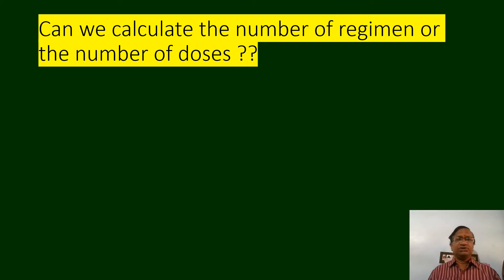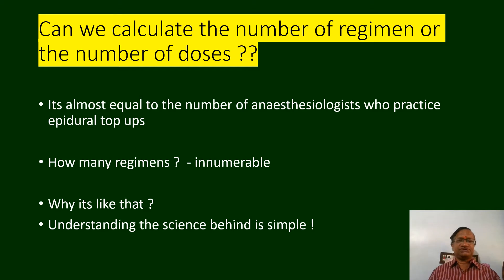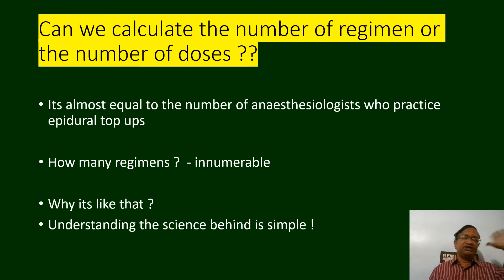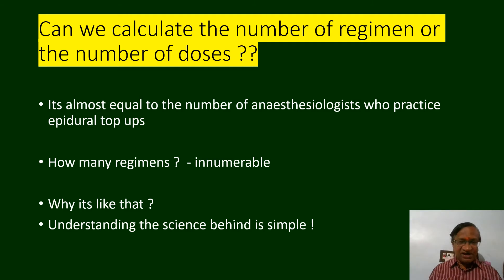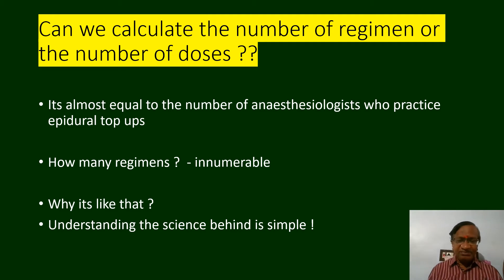Can we calculate the number of regimens or the number of doses? It is almost equal to the number of anesthesiologists who practice top-ups — everyone has got his own regimen, everyone has their own top-up regimens. Why is it like this? Because I think we feel that understanding the science behind this is simple, but are we actually doing that?